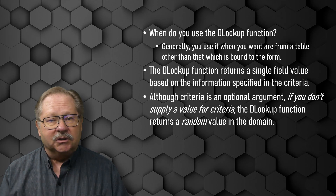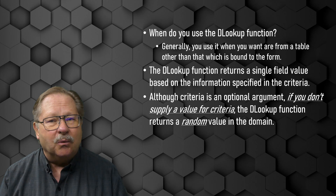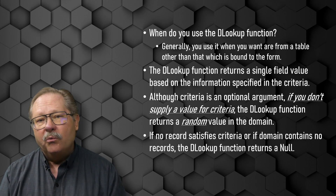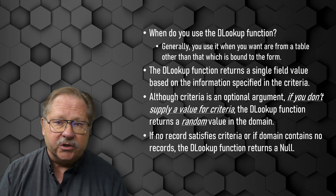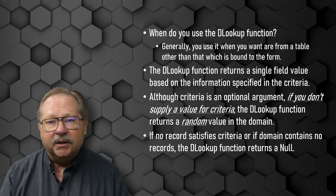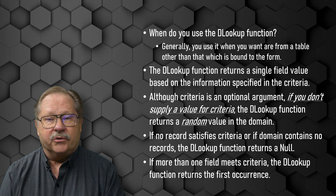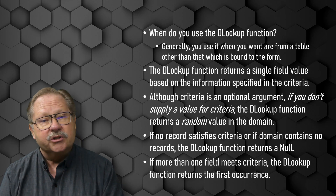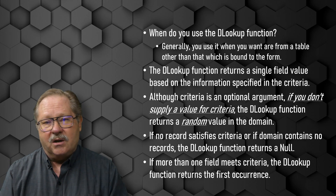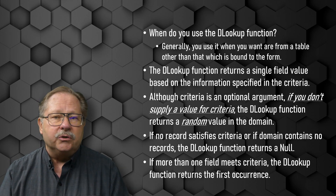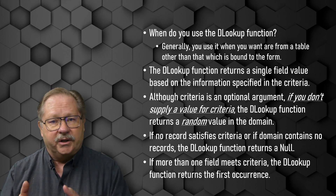If you have a full table, it'll just find the first one and give it to you — which is generally not what you want. If no record satisfies the criteria, or the domain contains no records at all, DLOOKUP returns null and you'll have an empty field. If more than one record meets the criteria, DLOOKUP returns the first one it finds, so you need to zero down to a single record — generally by using a primary key as the focus of your criteria.